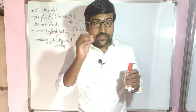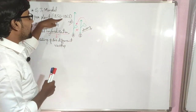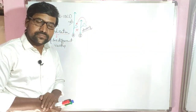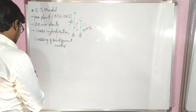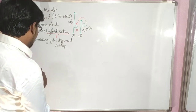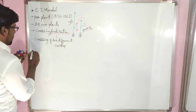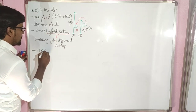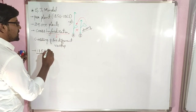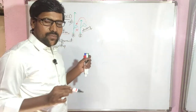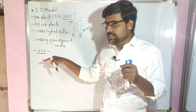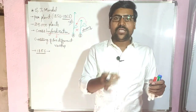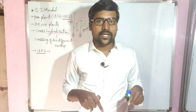Mendel conducted this kind of cross hybridization experiments for seven years and studied a total of 29,000 plants. In 1863 his work was completed, and in 1866 he published all his investigations and findings in the journal Proceedings of the Natural History Society.